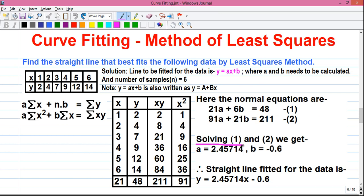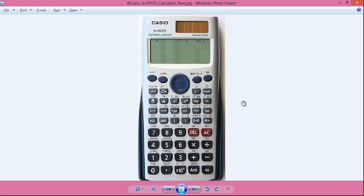So by solving equation number 1 and equation number 2, we get a = 2.45714 and b = -0.6. Do you know you can directly solve two linear equations on this Casio FX-991ES scientific calculator? To know more about this, please watch my video on equation solver mode of this calculator. Link to that is given in the video description below.